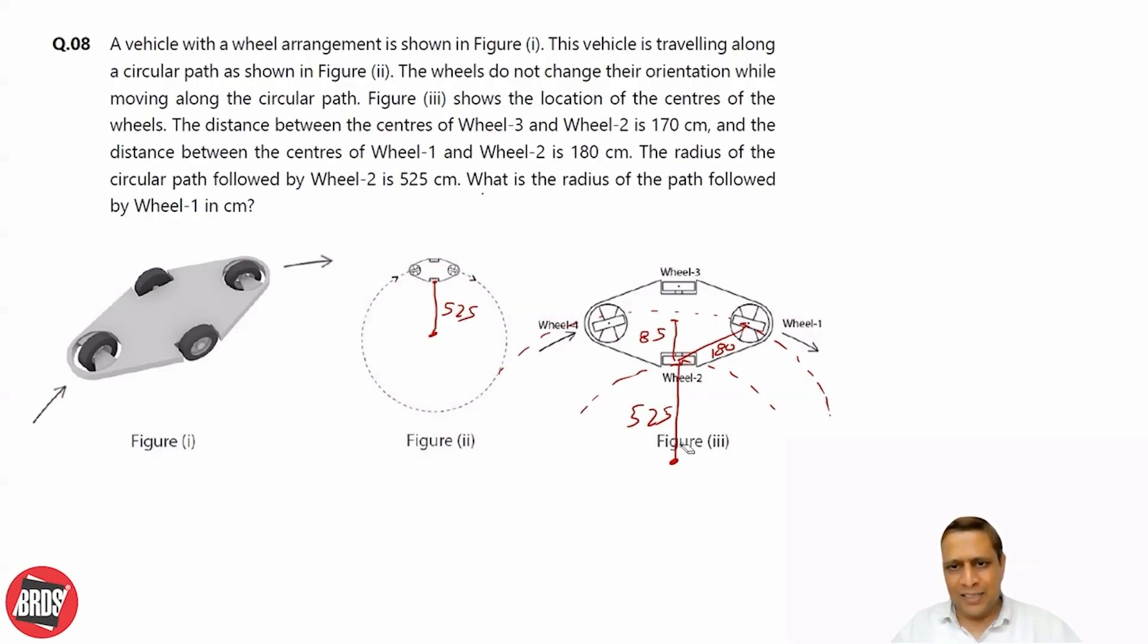For getting this radius, I need to know this distance. Let's connect these two points also. By observation, we can see this will be a right triangle. Let's say this length is x, and this is the radius r which we are looking for.